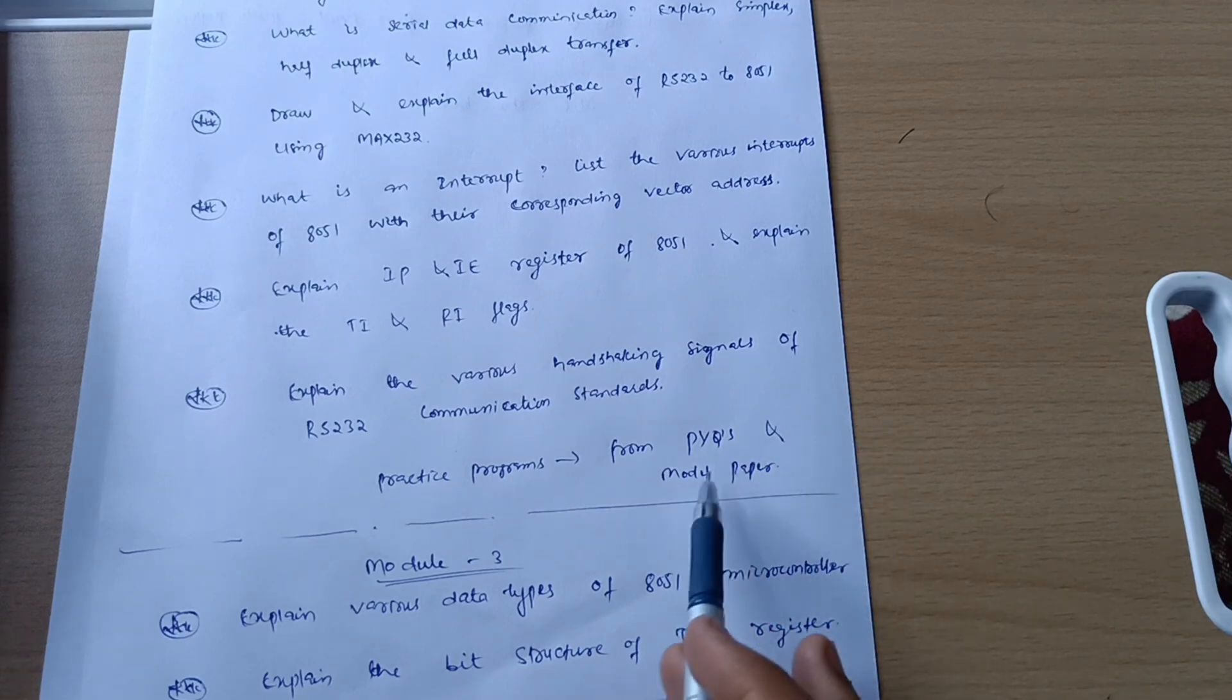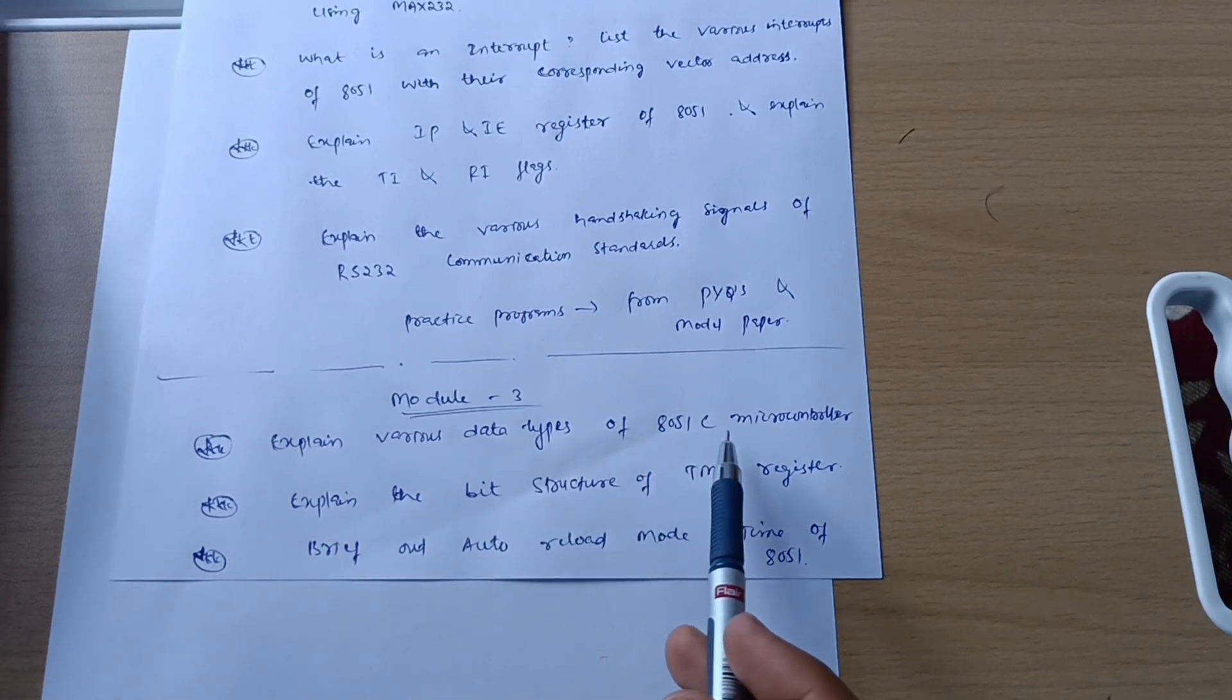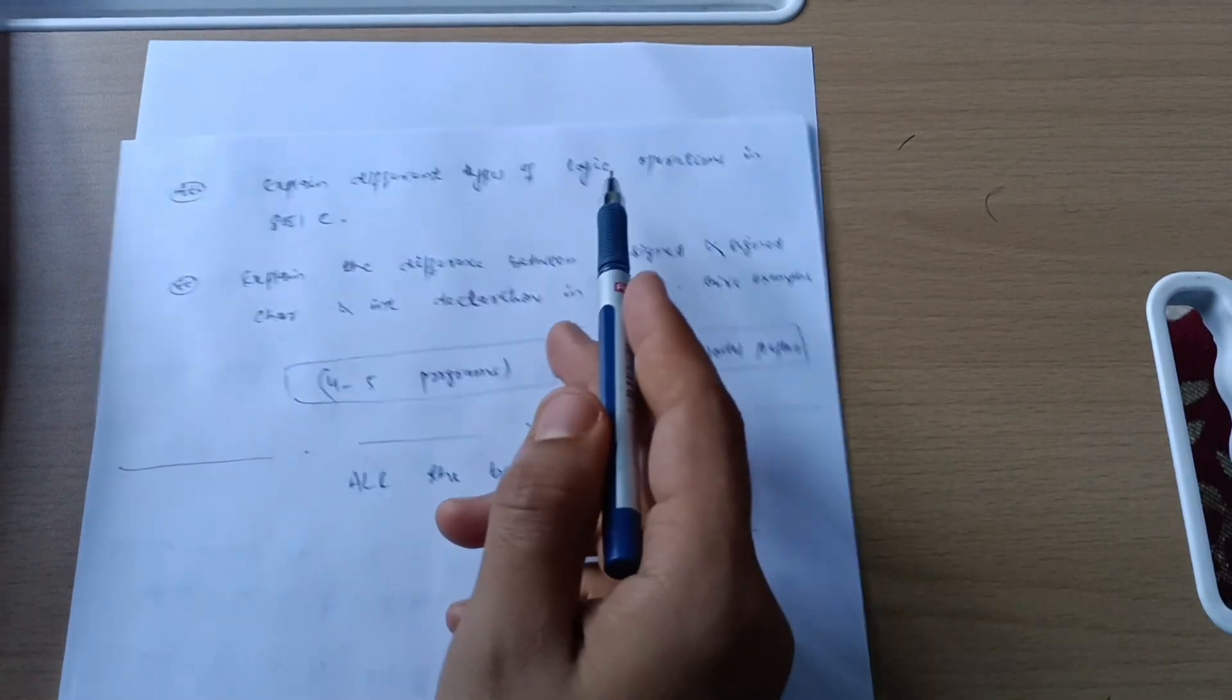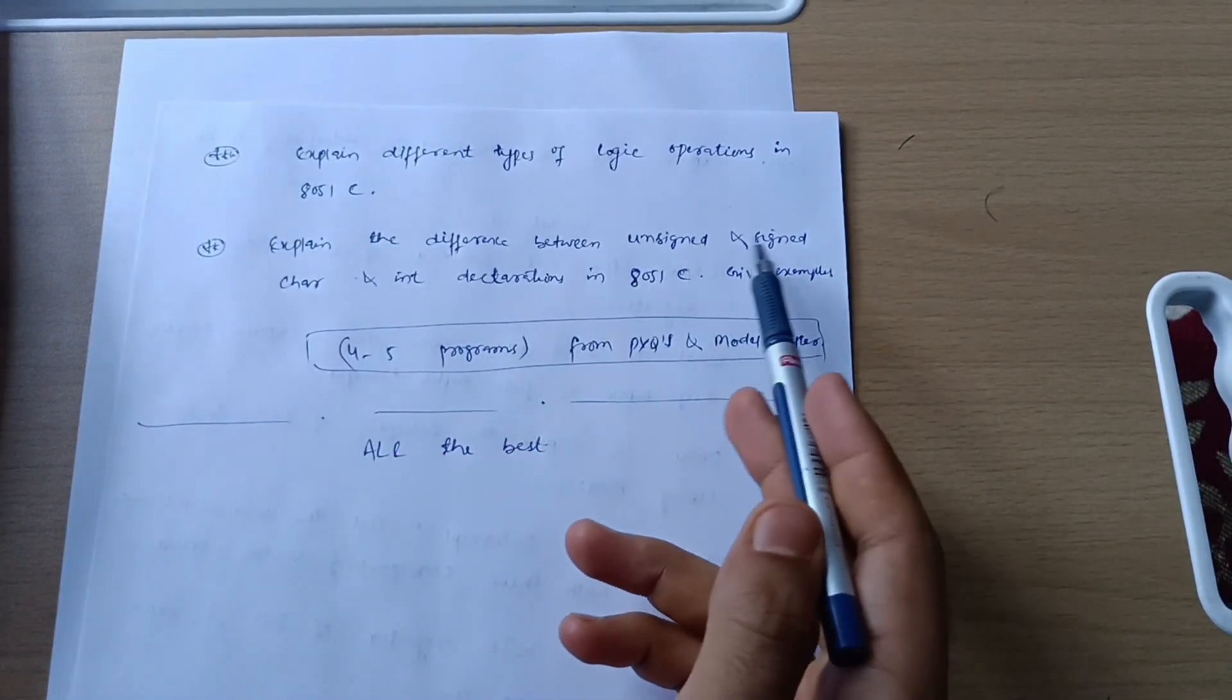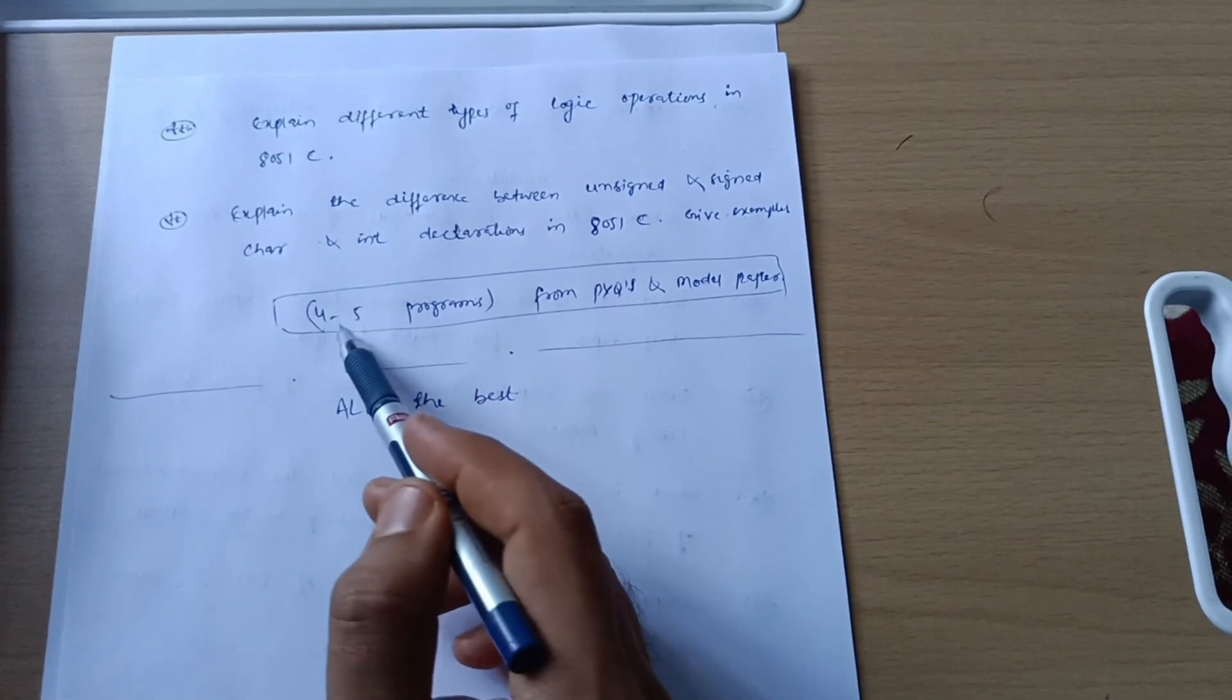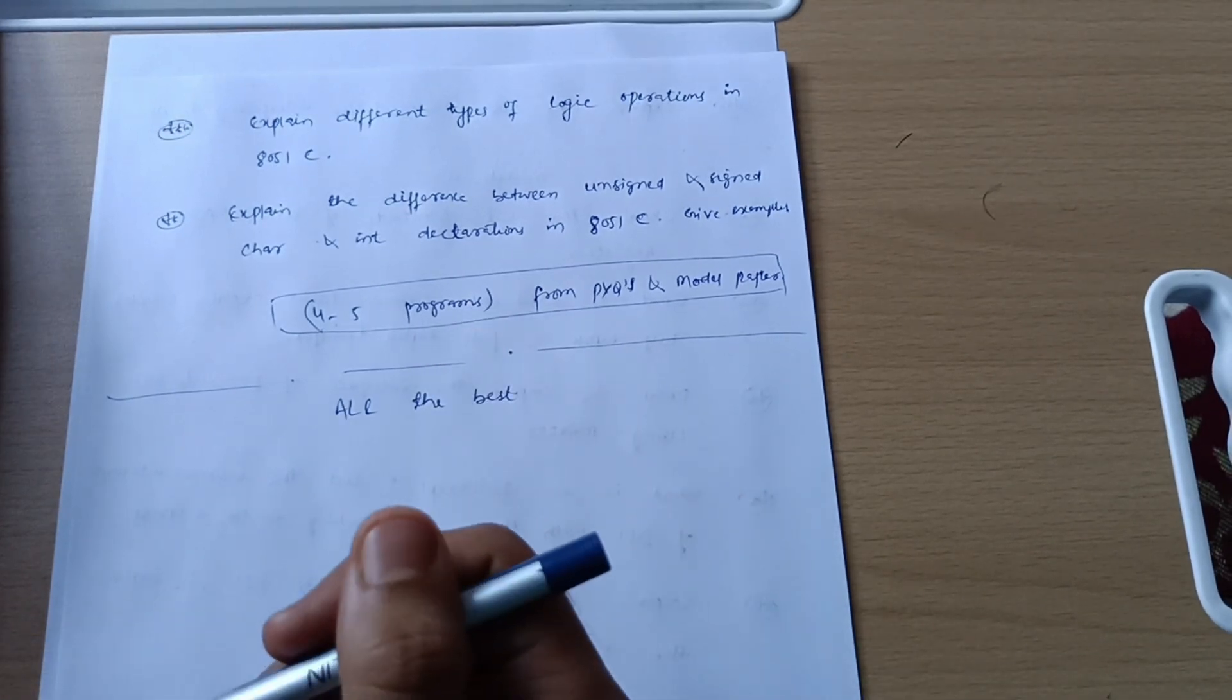Next is Module 3: Explain various data types of 8051C microcontroller. Explain the bit structure of TMOD register. Describe auto reload mode of timer of 8051. Explain different types of logic operations in 8051C. Explain the difference between unsigned and signed character and int declarations in 8051C, give examples.